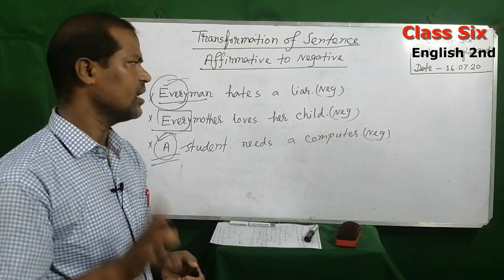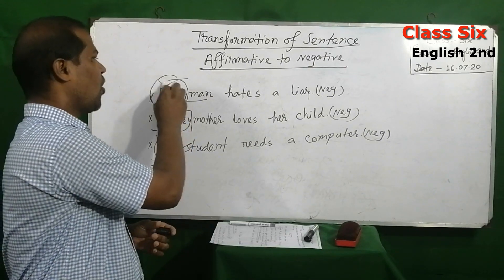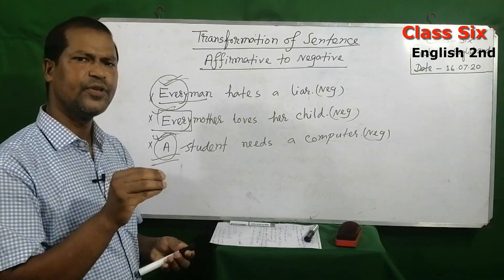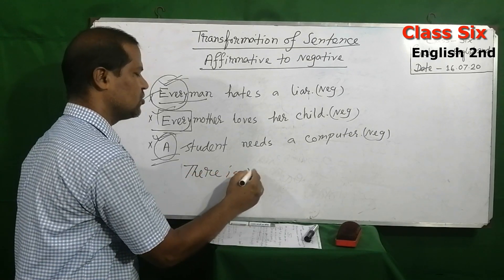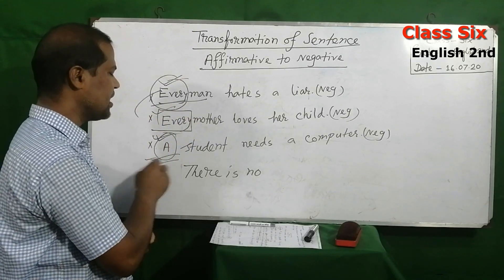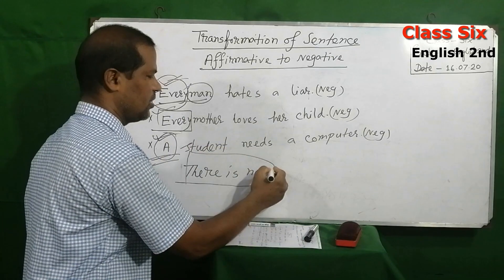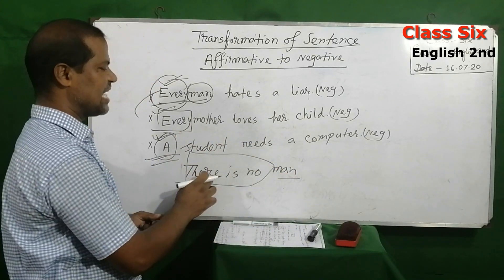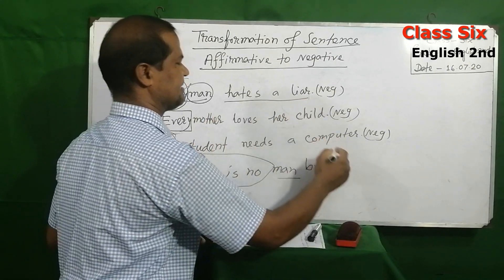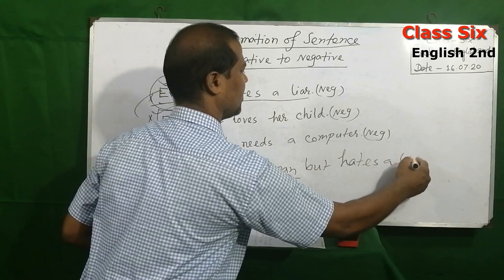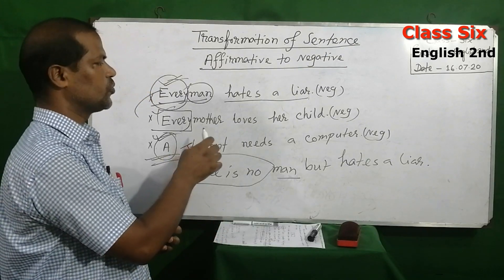To make such a sentence negative, instead of 'every' or 'a' you have to write 'There is no.' Then write the subject word — for example, 'There is no man' — then write 'but,' followed by the rest of the sentence: 'hates a liar.'